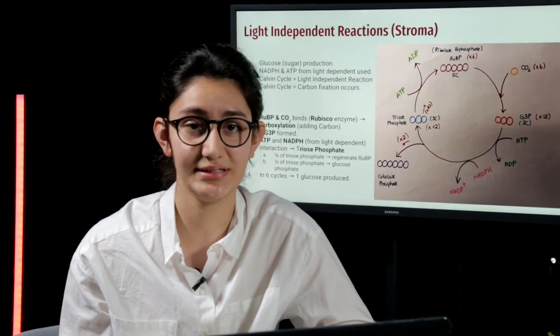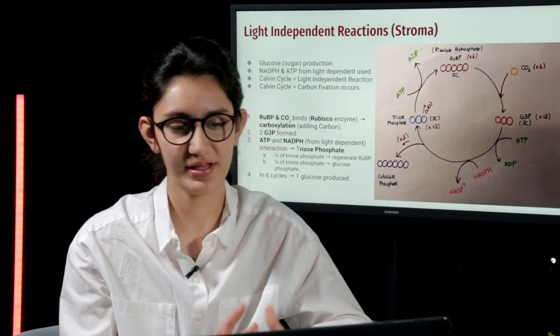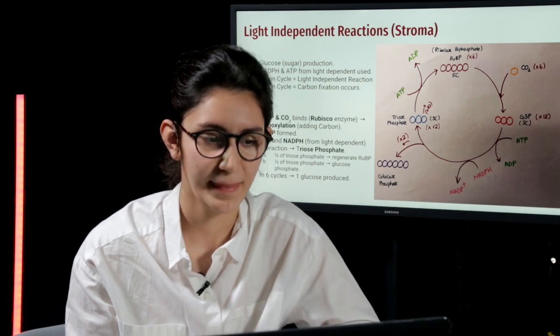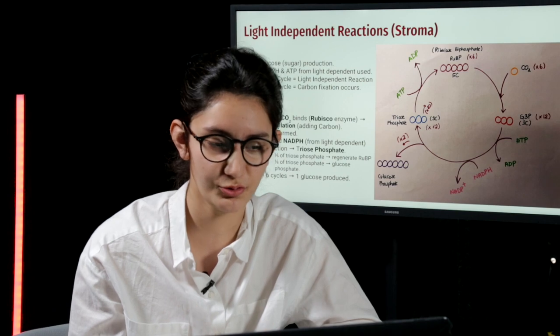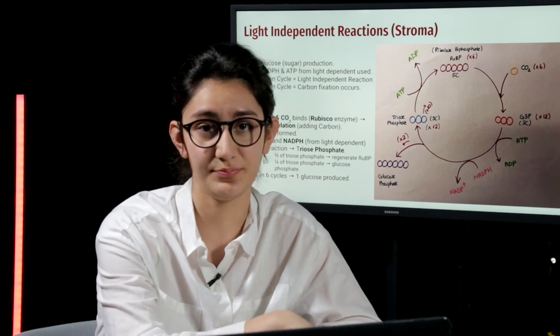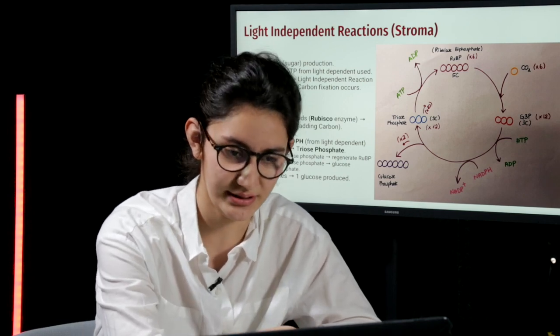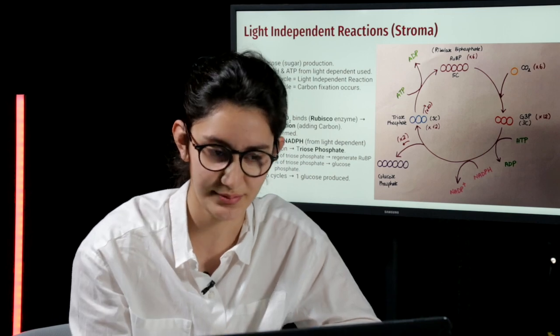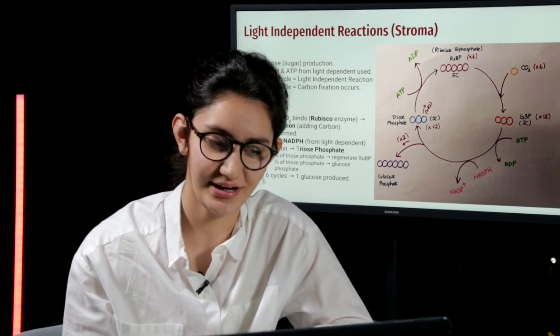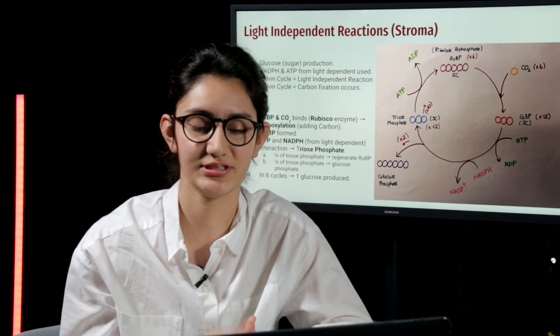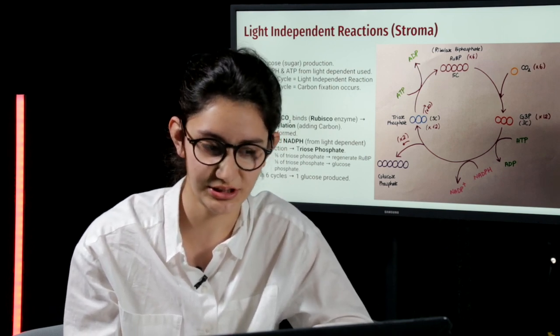We will talk about light-independent reactions. These occur in the stroma. The light-independent reaction is basically for producing glucose from NADPH and ATP that were produced in the light-dependent reactions. This is where the Calvin cycle occurs, and the Calvin cycle basically helps for carbon fixation.